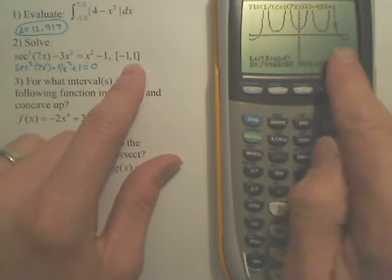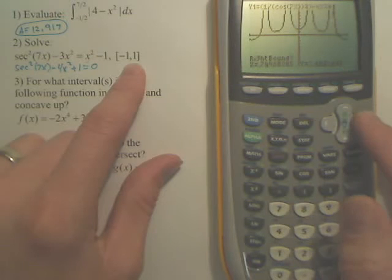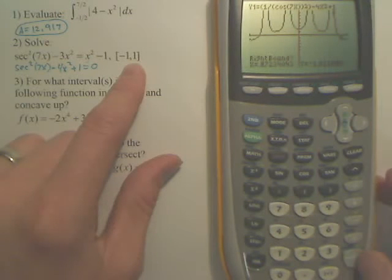And you need to do a left bound, which is the left of it. And then you need a right bound. You need to cross the x-axis. And then you always hit guess because it's numerically approximating it.